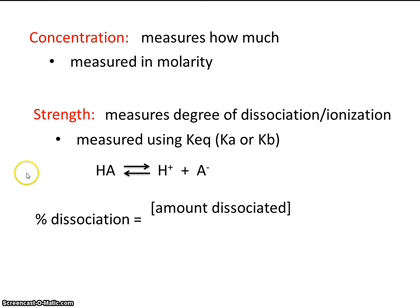So we could use this formula here. The percent dissociation, or the percent of this acid that breaks up, would be the amount that's dissociated, that's here, divided by the initial concentration of this, times 100. Now we're not going to use this formula too much. I just wanted to show this to you.